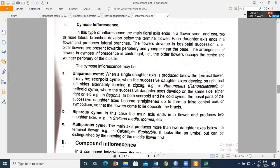In scorpioid cyme, the daughter axes develop alternately on the right side, left side, left side, right side, and this forms a zigzag pattern. For example, Ranunculus, and this type of inflorescence is called uniparous.